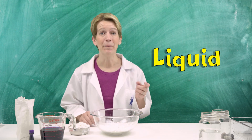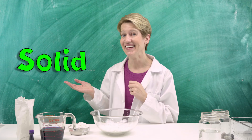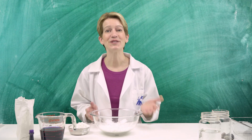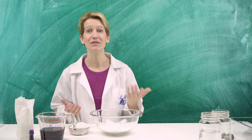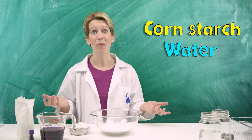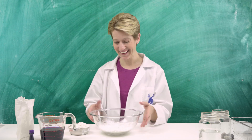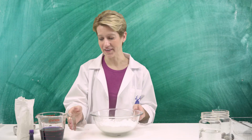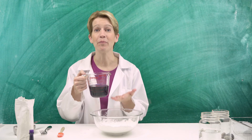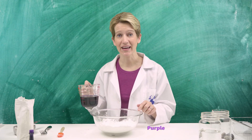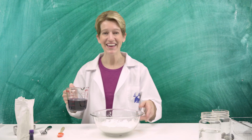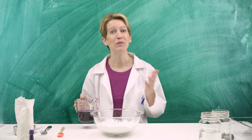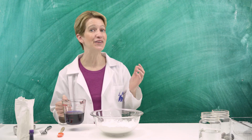So an oobleck is my favorite non-Newtonian fluid. It acts like a liquid, but it also acts like a solid, and it is really fun. To make an oobleck, you're going to need two simple ingredients: corn starch and water. That's it. We're going to take two cups of corn starch and one cup of water. I've colored this water purple so that it's easier to see the oobleck against my white science table. And then we're going to mix them together and then we'll play with it.